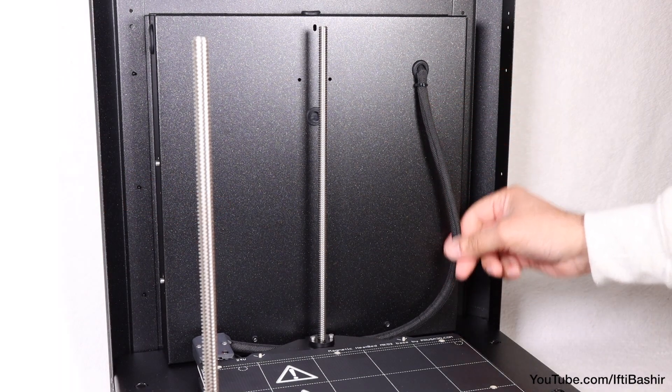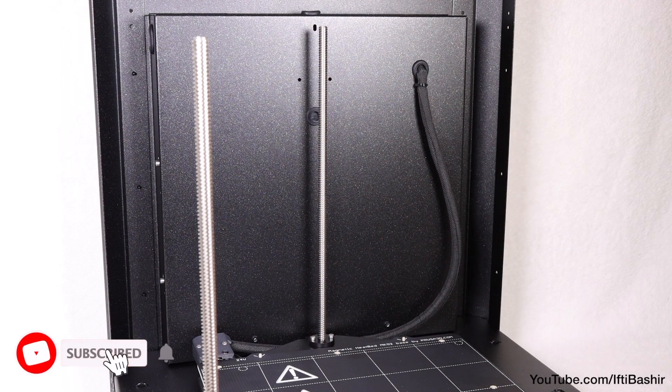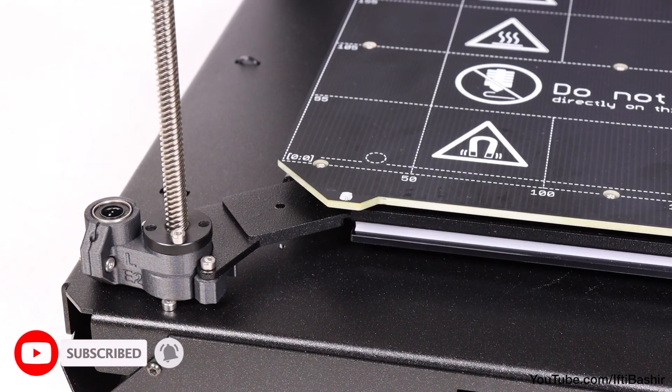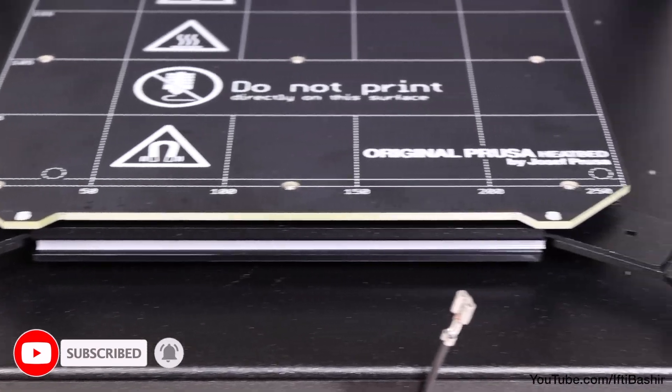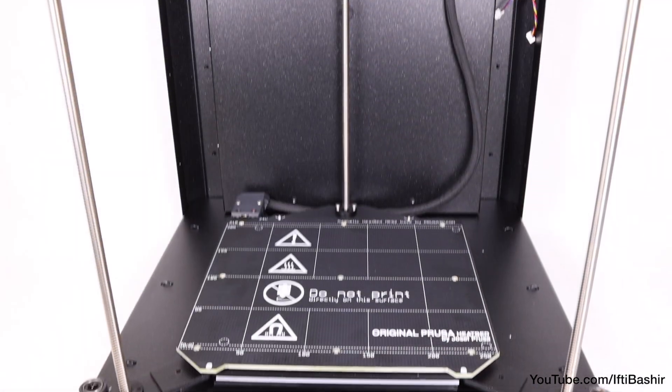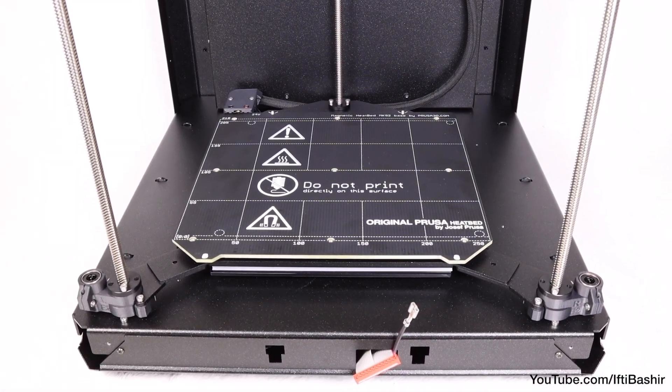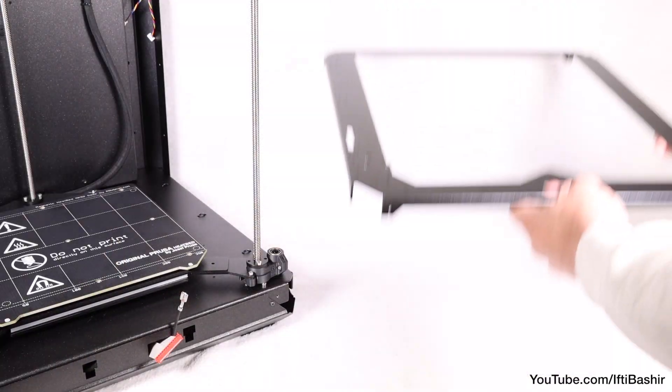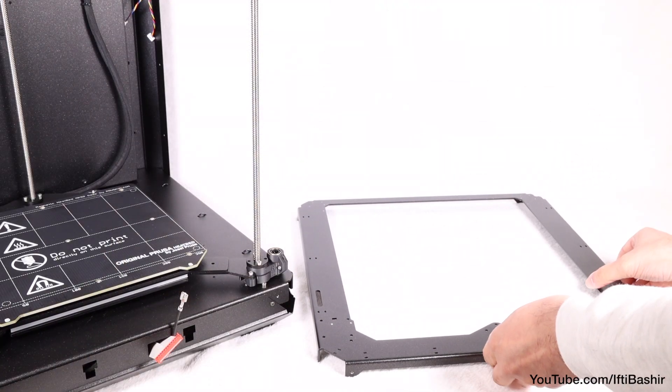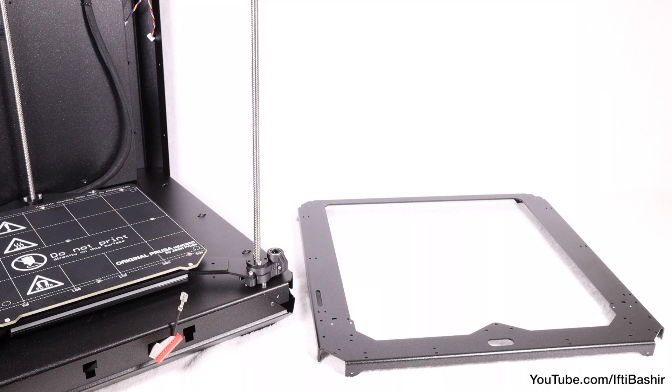We have plenty of slack on the heatbed cable bundle for when the heatbed moves up and down, and the heatbed has been secured to the three Z-axis motors. With that done, take a breather, since we're now ready to move on to the largest and more complex section of the build, the Core XY assembly.